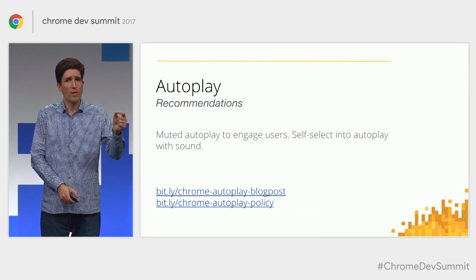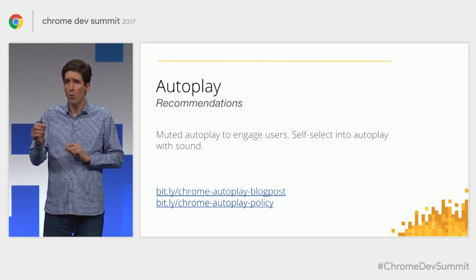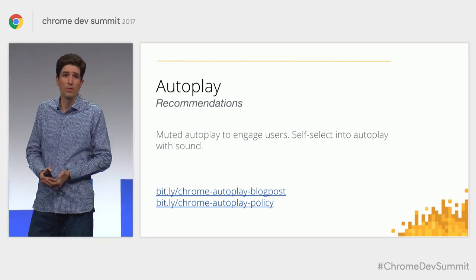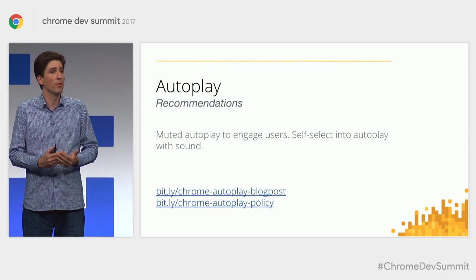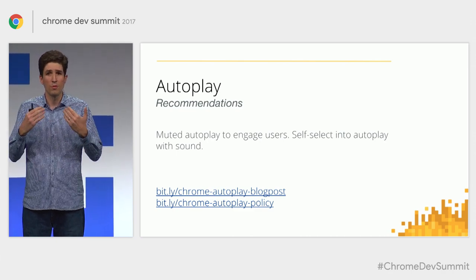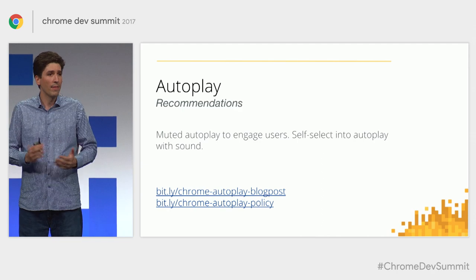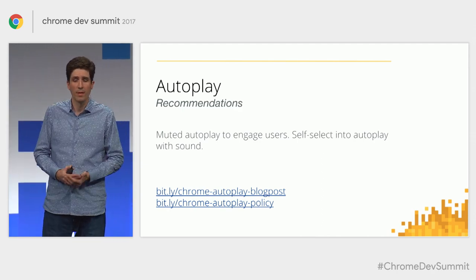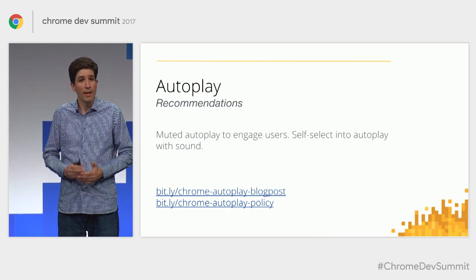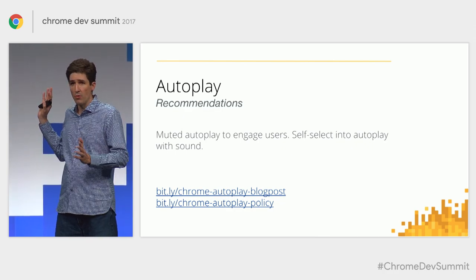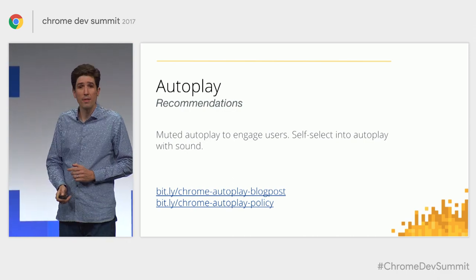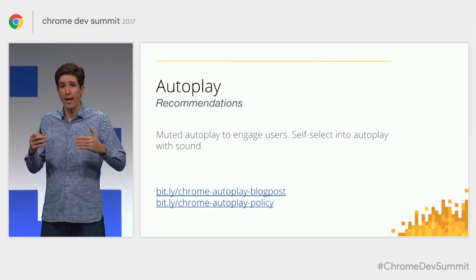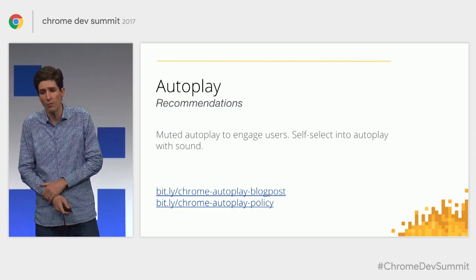Two things to know about autoplay: what is the best approach? Based on our conversations with users and the work we've been doing, we recommend muted autoplay — allow users to self-select into the audio experience. That's not going to work for every site; in some cases click-to-play may be more applicable. Because there are a lot of technical details, keep an eye on the autoplay policy page for updates as dates and details around things like attributes change.